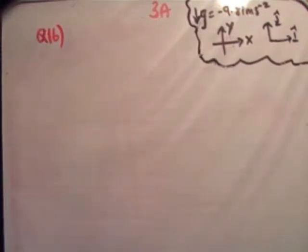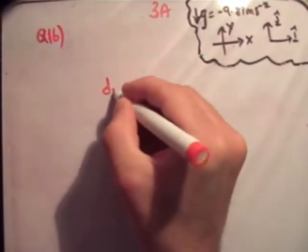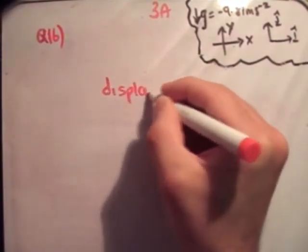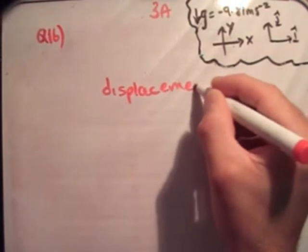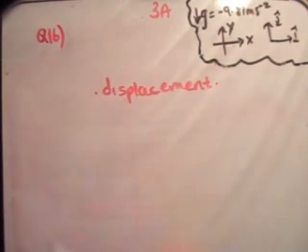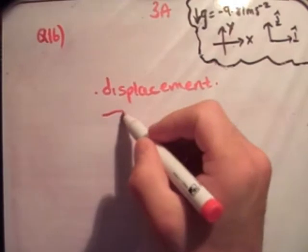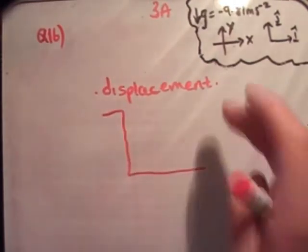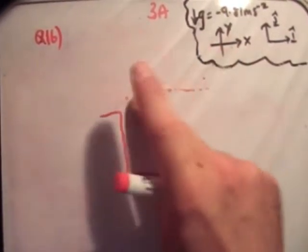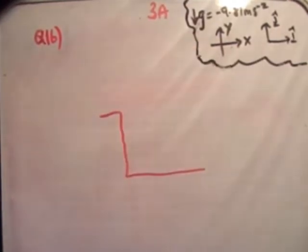Now this one of course involves the concept of displacement. And I've spoke about this in reasonable depth on question 15 of this exercise 3a. So if you want a bit more detail go look at that question. However, displacement essentially is as follows. If this represents a cliff.